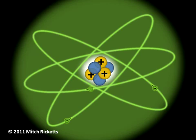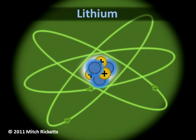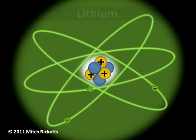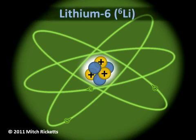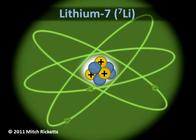For instance, remember that all atoms of lithium have three protons in the nucleus. However, the number of neutrons in lithium atoms may vary. The isotope lithium-6 has three neutrons. The isotope lithium-7 has four neutrons.